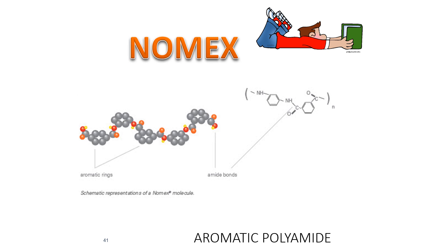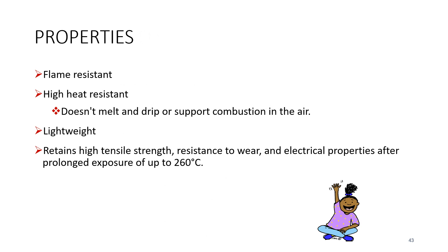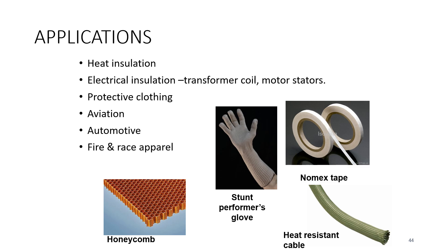Nomex — another name is poly(m-phenylene isophthalamide) — is the trade name of a meta-aramide fiber produced by DuPont. It is spun into a fiber and also made into sheets of paper formed into a honeycomb shape. The main strength of Nomex is its heat resistance. If Kevlar's advantage is high tensile strength, Nomex is very good at heat resistance.